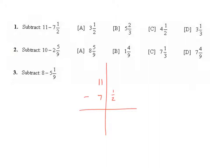Our first step is to look at the decimal part of the problem. We're trying to take a half away from nothing. We can't do that, so we are going to have to regroup.